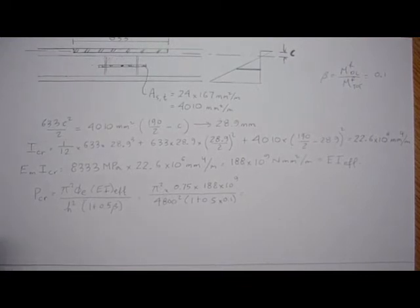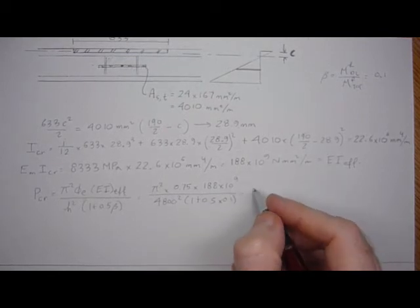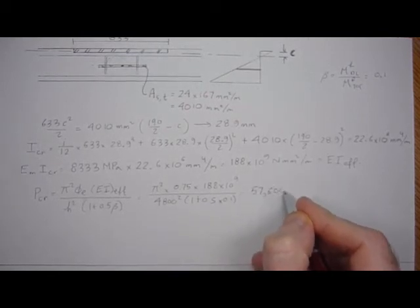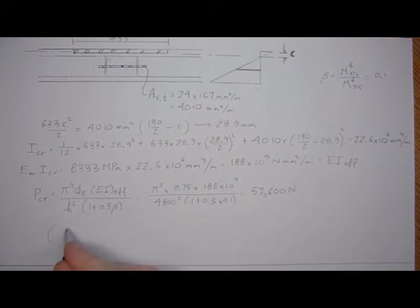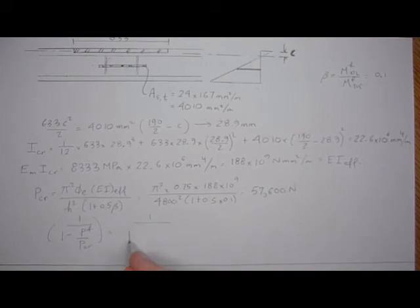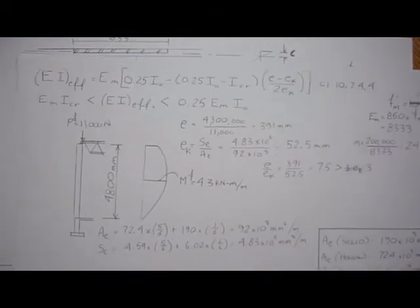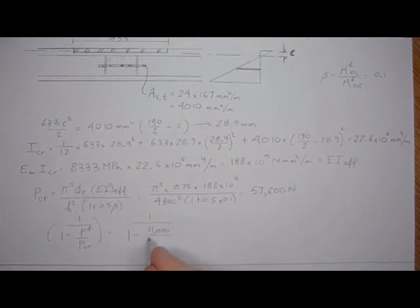You know we just have to find out what the moments dead and total and ratio, but let's say it was 0.1. So we can now calculate the P critical in Newtons. So we got pi squared, 57,600 approximately.